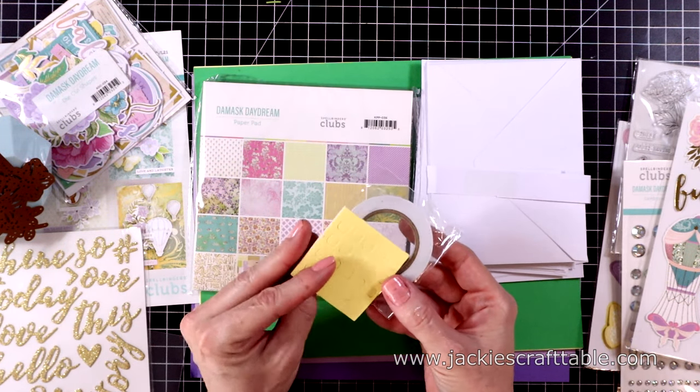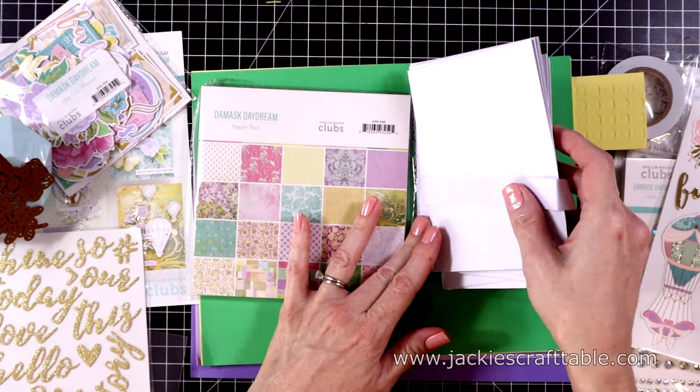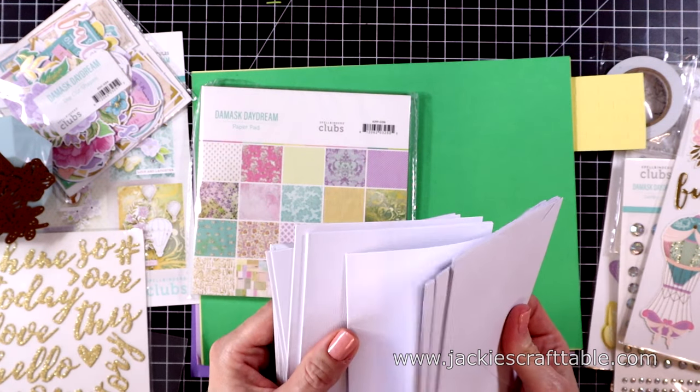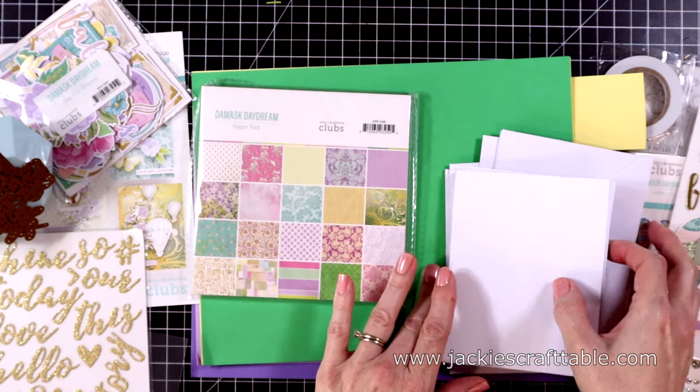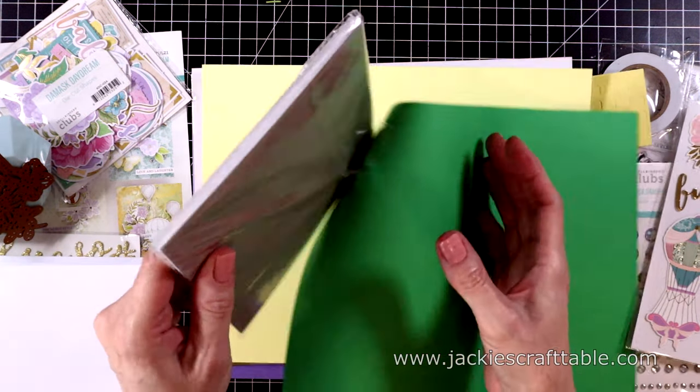Here's some adhesive. You get double-sided tape as well as some foam squares. I love that they give you envelopes and card bases. You get 10 of each. It just makes creating cards so quick and easy with the pre-made card bases.